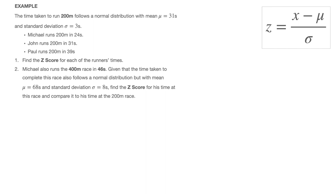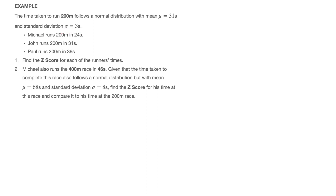To do that, we're going to work through an example in which the time taken to run 200 meters follows a normal distribution with mean mu equals 31 seconds and standard deviation sigma equals 3 seconds. Michael runs 200 meters in 24 seconds, John runs it in 31 seconds, and Paul runs it in 39 seconds. The first question is to find the z-score for each of the runners' times.